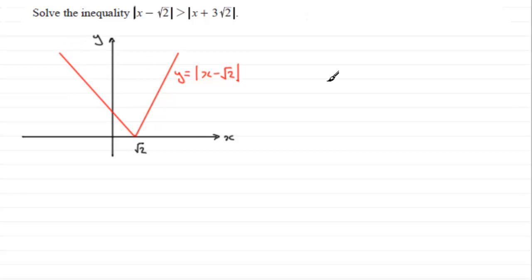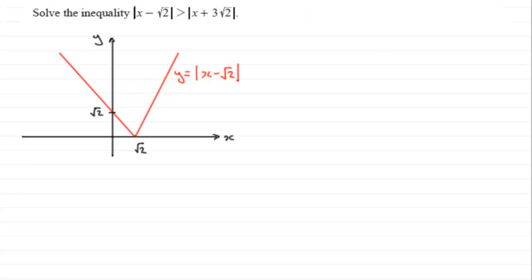This point here would be where y is equal to root 2, that's when x is 0, because you have the mod of negative root 2 which would be positive root 2. So that's that graph.